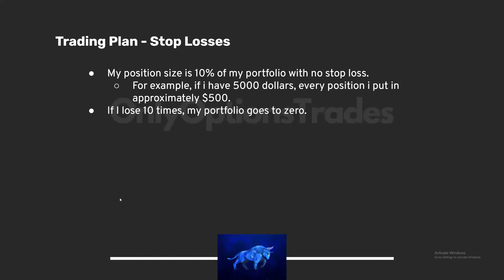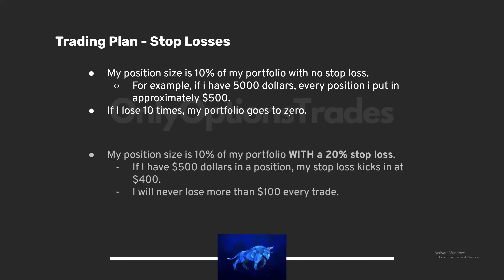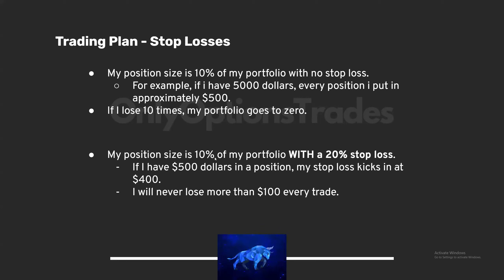Talking through position sizing — I can't stress this enough. We're going to continue to focus on managing risk. That needs to be your number one priority — you should always be considering the risk in any position before the profit. Consider this: if my average position size is 10% of my portfolio with no stop loss, and I have a $5,000 portfolio, every position I put in approximately $500. If I lose 10 times, my portfolio goes to zero.